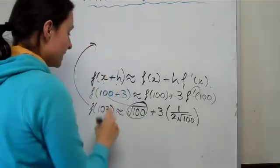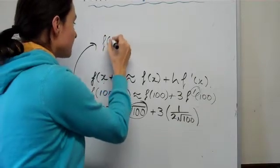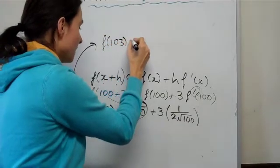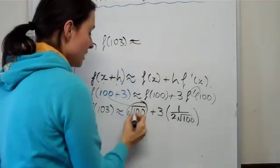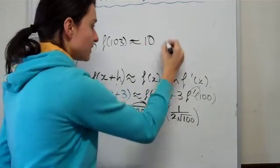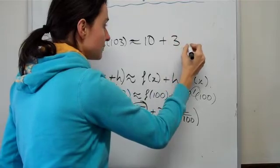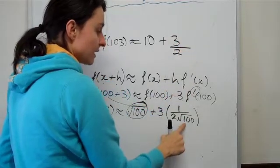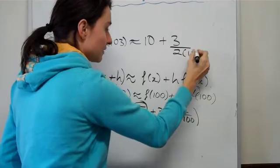And basically what we can now do is just simplify it. So √103 is equivalent to √100, which is 10, and this, which when we solve it, becomes 3 over 2 times by 10. So 10 is at the bottom.